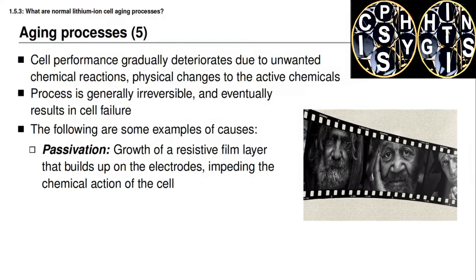Another process of aging is known as passivation. You've already learned about one type of passivation: the formation of an SEI film layer. This film layer is known as a passivation layer because when it forms on the surface of the negative electrode particle, it impedes the further formation of SEI layer, passivating or isolating that layer from more chemical reactions. However, if the SEI layer is somehow dissolved or cracked, SEI will form where fresh graphite has been exposed, and so the SEI, even though it is formed during the first charging cycle, does tend to gradually grow over time.